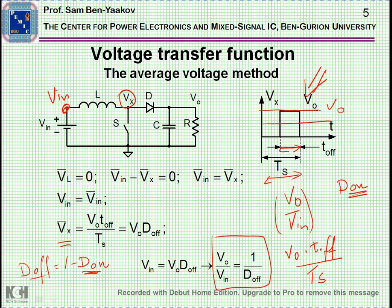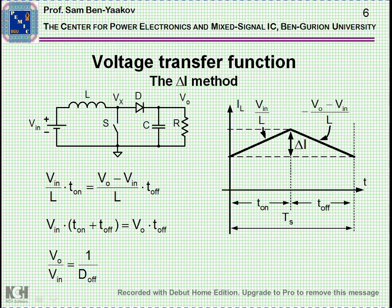When D on is very large, approaching 1 — it cannot be more than 1 — then D off would be small, say 0.1, and then V out to V in would be large, like 10 times in this case. So here is the expression for the voltage gain of this stage.